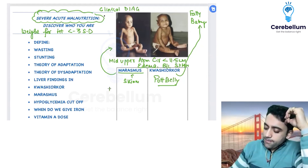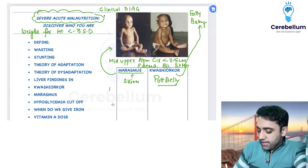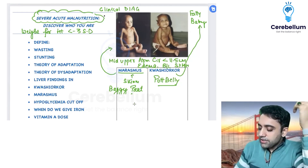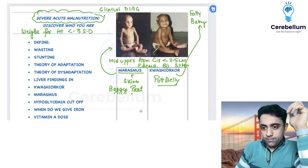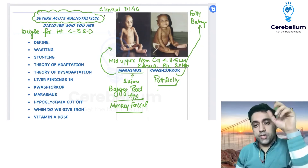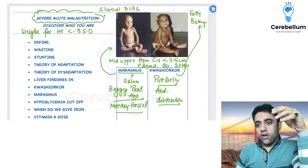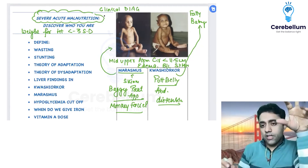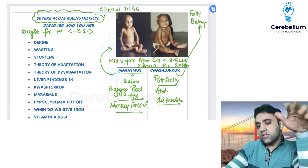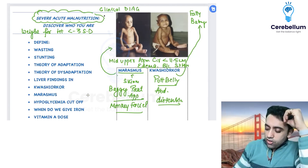If the question mentions baggy pant appearance or monkey facies, the answer is Marasmus. If there is abdominal distension — not anasarca, just abdominal distension — the answer is Kwashiorkor. Remember: fatty baby or isolated abdominal distension points to Kwashiorkor.